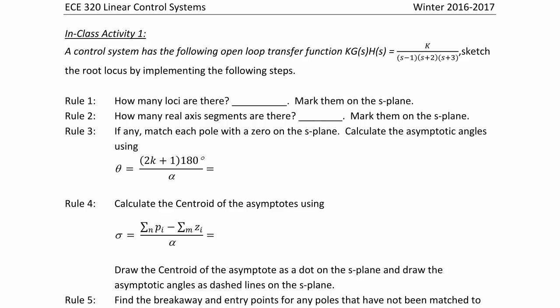The first step is: how many loci are there, and mark them on the S-plane. There are three poles and no zeros, so there are three loci. We will mark those in a moment.